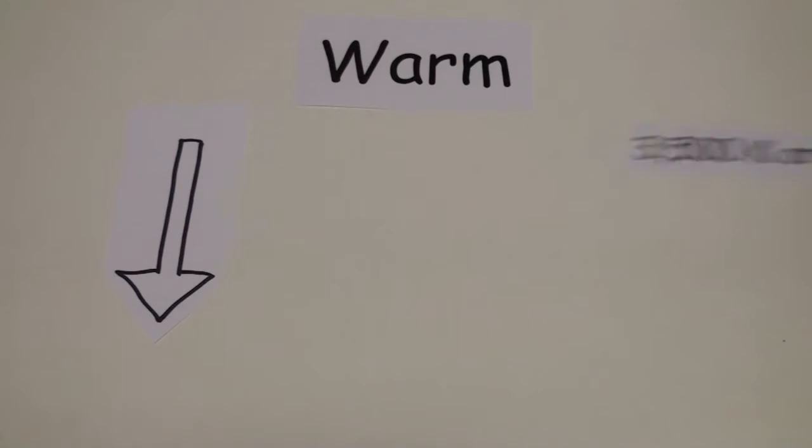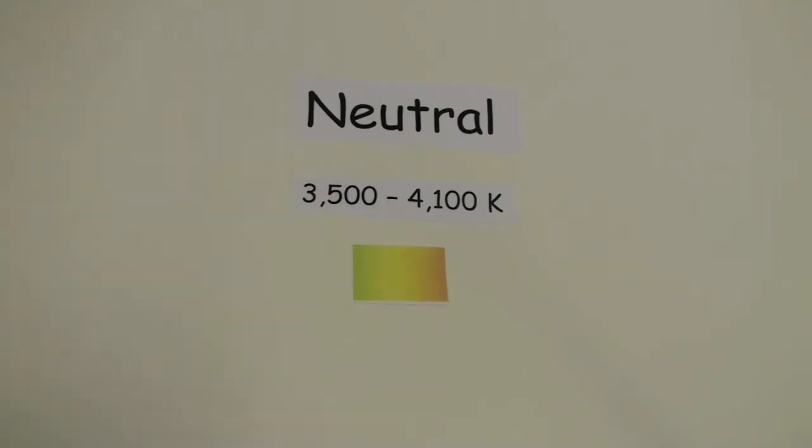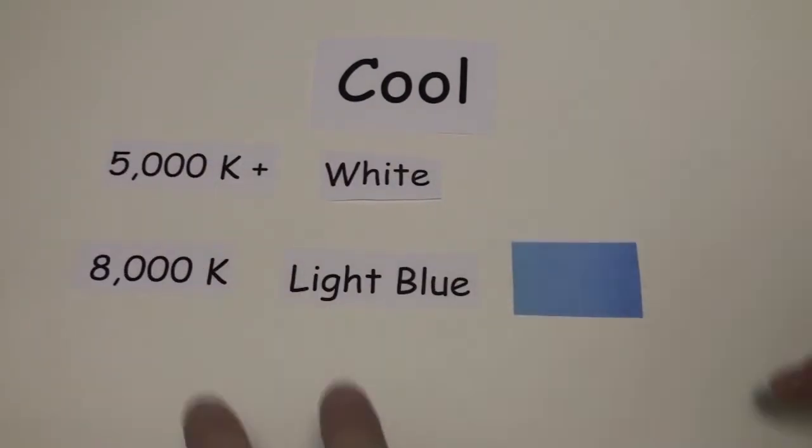Warm sources have a lower color temperature, 3,500 Kelvin or less, and appear red or yellow. Neutral colors have a color temperature of 3,500 to 4,100 Kelvin and are yellow in appearance. Cool colors are 5,000 Kelvin plus and go from white to blue in color appearance.